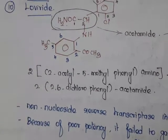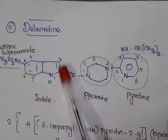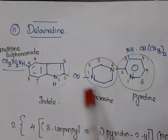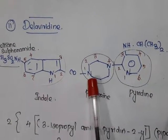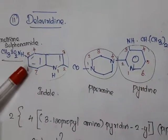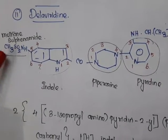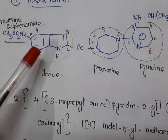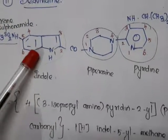The next drug is delavirdine. In its structure we have indole — the fusion of pyrrole with benzene — piperazine, and pyridine, giving three rings. In the fifth portion of indole, what is attached is CH₃SO₂NH, which if it were CH₃SO₂NH₂ would be called methanesulfonamide. So the parent for delavirdine is indole-5-yl methanesulfonamide.